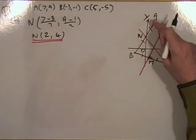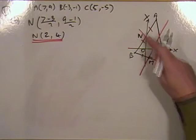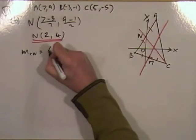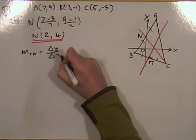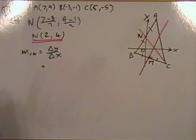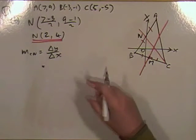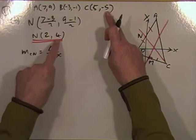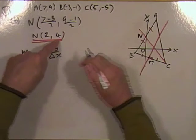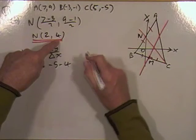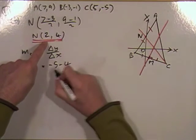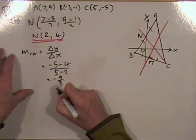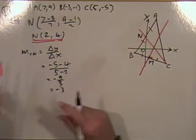That's the point on the line. For the gradient, I'll get the gradient of CN. Difference in y coordinates over difference in x coordinates — that's C and N. So negative 5 take away 4 for the y's, and 5 take away 2 for the x's — giving negative 9 upon 3, which is negative 3.